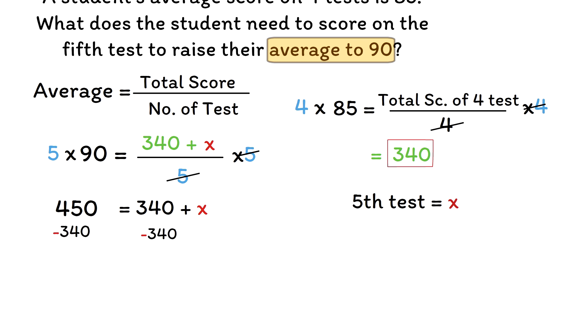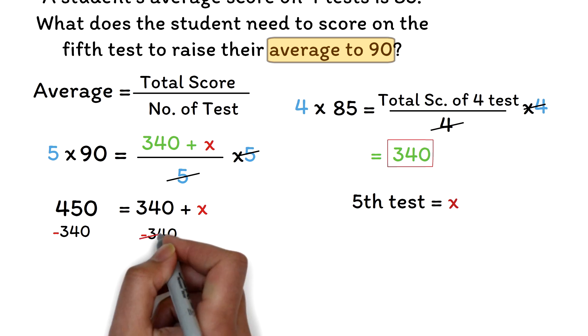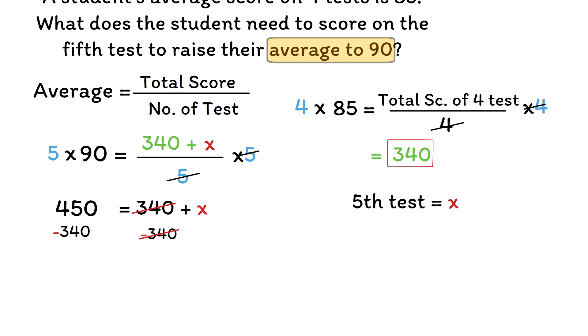When we subtract 340 from 340 plus x, negative 340 will cancel 340, leaving x. Again, when we subtract 340 from 450, we will get 110. Therefore, the student needs to score 110 in the fifth test to raise the average to 90.